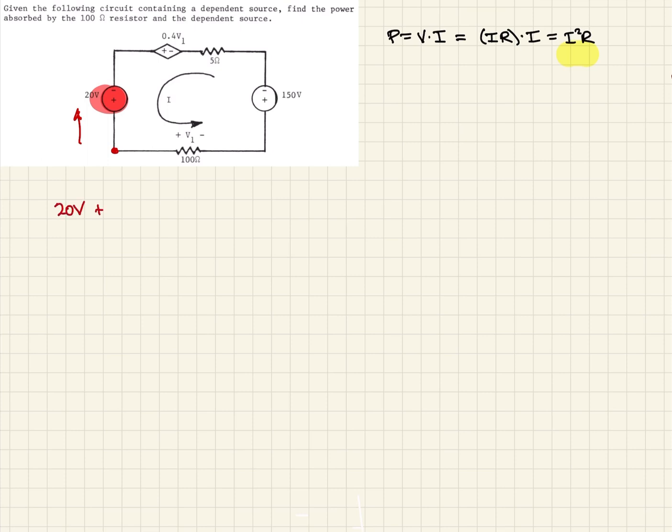We keep going around the circle, and the next thing we see is our dependent voltage source. So we can write that as plus 0.4 V1.